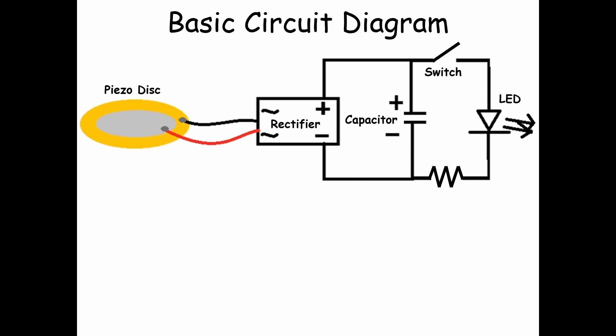Let us look at the required circuit diagram. Over here we have a piezo disc. Since it generates alternating current in response to varying pressure, it is connected to a rectifier. The capacitor stores the charge when the piezo disc is in use. Once sufficient charge is stored, we then close the switch. When the switch is closed, the discharge of charge via resistor to LED takes place, which leads to lighting up of the LED.